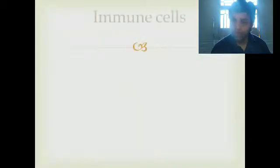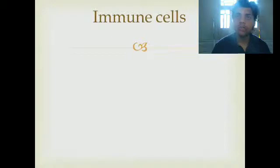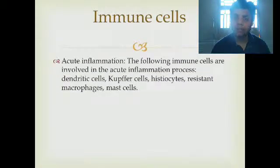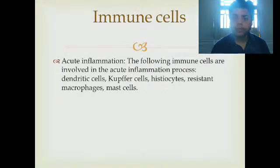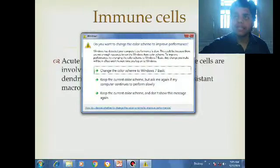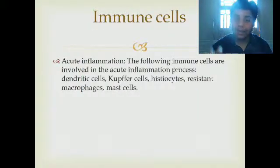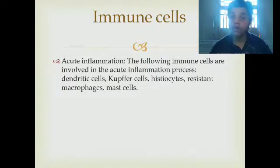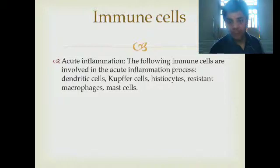Now, in the case of acute inflammation, the immune cells involved are dendritic cells and Kupffer cells. Kupffer cells are those cells which are present inside the liver and are specially responsible for engulfing or breaking down red blood cells whose lifespan is completed. We also have histiocytes — cells of the tissue — resident macrophages, and mast cells.